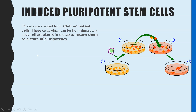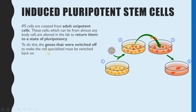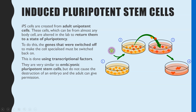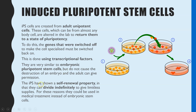The iPS cells are created from adult unipotent cells. Once you've switched back on all the genes, we call that returning to the state of pluripotency, using transcription factors. Once you've done that, these induced pluripotent stem cells behave pretty much exactly the same as the pluripotent cells from a blastocyst. They have also shown self-renewal properties and can divide indefinitely to give limitless supplies. You wouldn't have to go through this whole process every time — you can allow them to divide and keep a source of them for that particular patient.